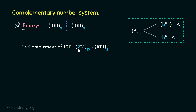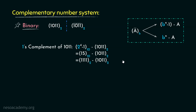2 raised to the power 4 is 16 and 16 minus 1 is 15. In binary, 15 means four 1's. So to come up with the 1's complement of the value 1011, all we need to do is subtract each of these bits from 1, which happens to be the symbol with the highest magnitude in binary. Just as while determining the 9's complement of 21 we subtracted 21 from 99 — that is, we subtracted every digit of 21 from the symbol having the largest magnitude in decimal, that is 9.